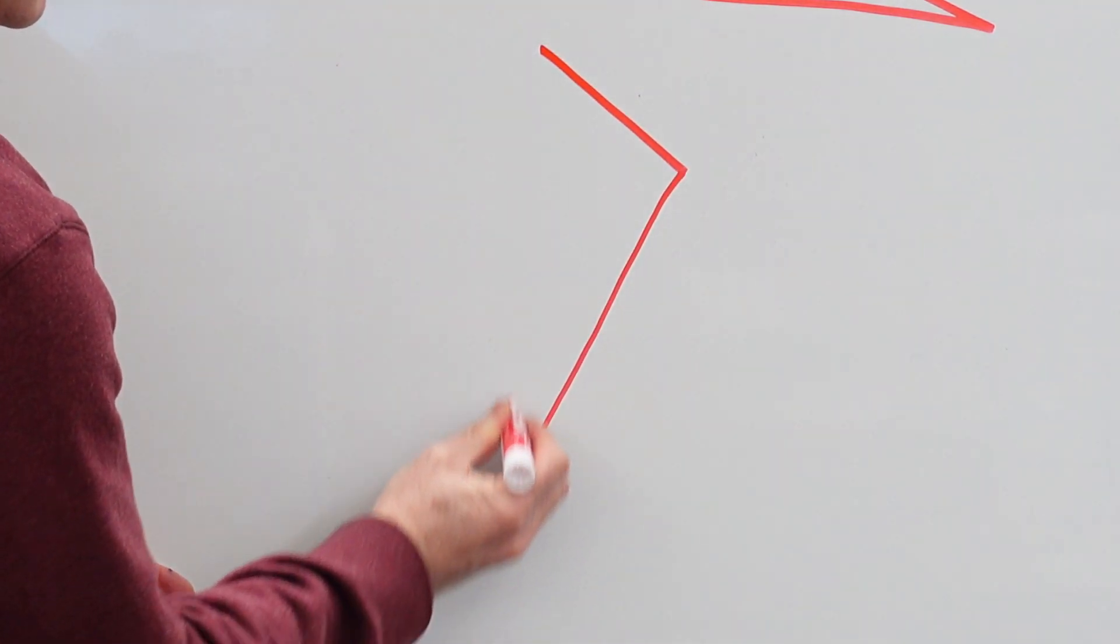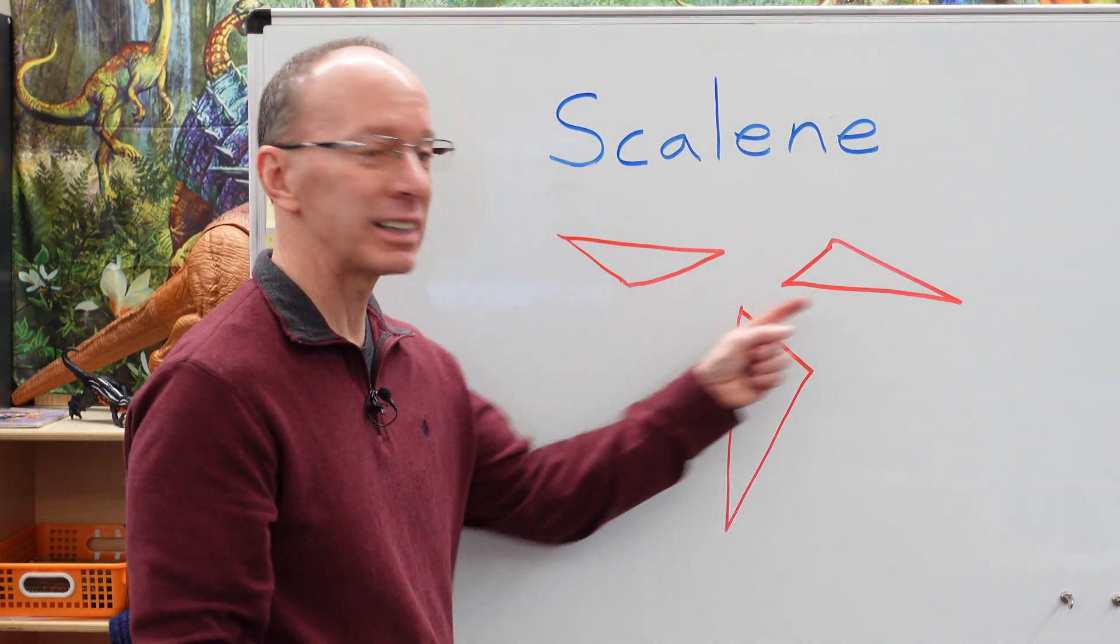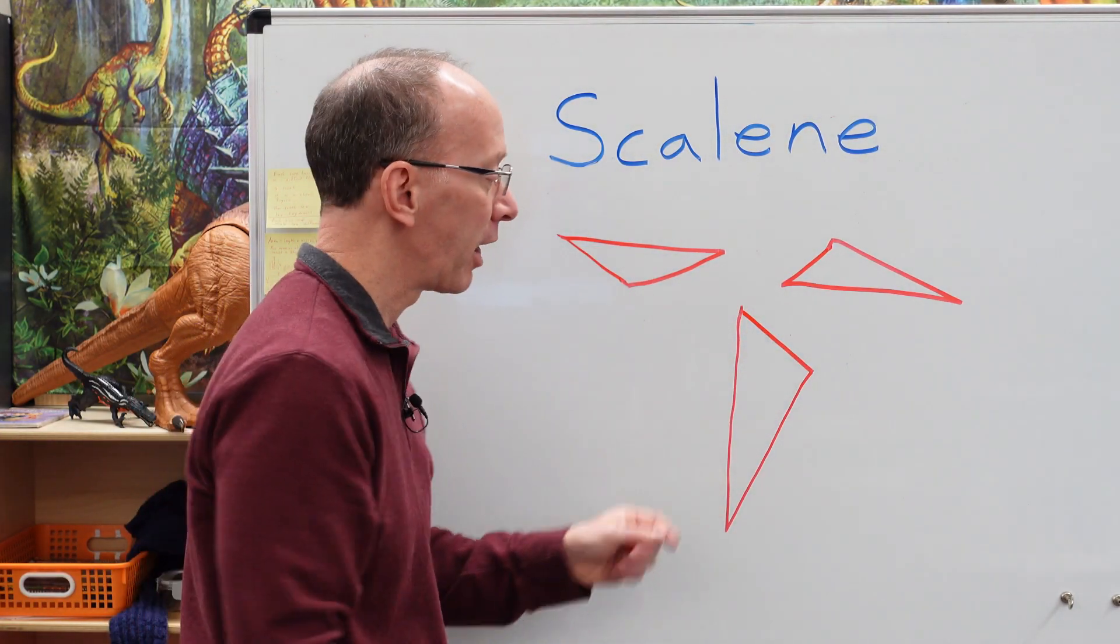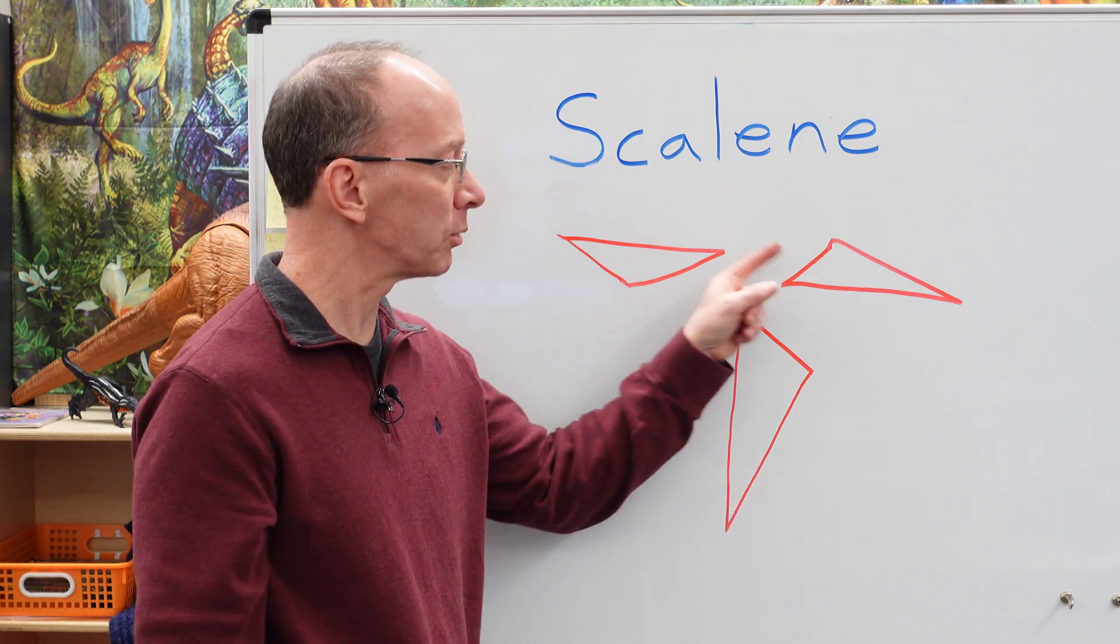Okay, nice and big here. You'll notice that on all of these scalene triangles, there are three sides. One, two, three. Uno, dos, tres. One, two, three.